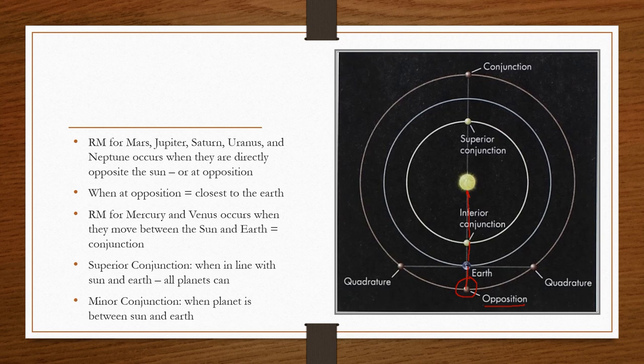Retrograde motion for Mercury and Venus is a little different. It occurs as they move between the sun and the Earth, which is known as conjunction. Every planet can be in conjunction. For the outer planets, planets past Earth, so Mars all the way to Pluto, they can be at conjunction by being opposite from Earth. But only Mercury and Venus can be in inferior conjunction. Only they can be between the Earth and the sun. They cannot have opposition.